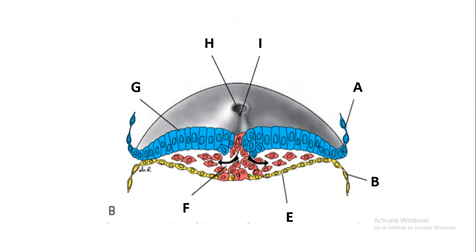This feature shows the three germ layers which have developed from the epiblast and hypoblast, such that the ectoderm comes from the epiblast, the endoderm comes from the hypoblast, and then cells of the mesoderm start penetrating in between the ectoderm and endoderm to form another layer known as the mesoderm.